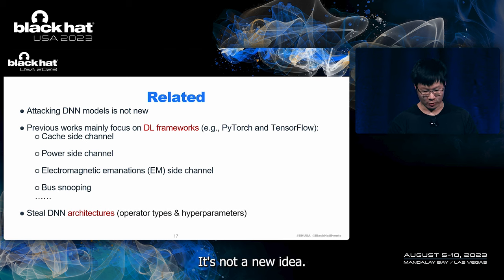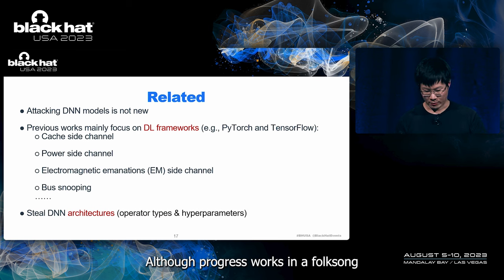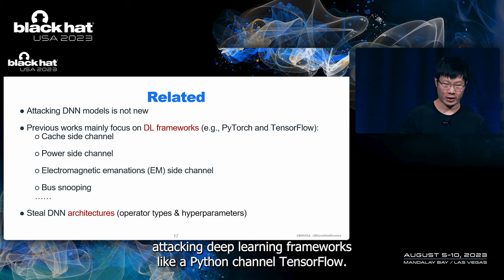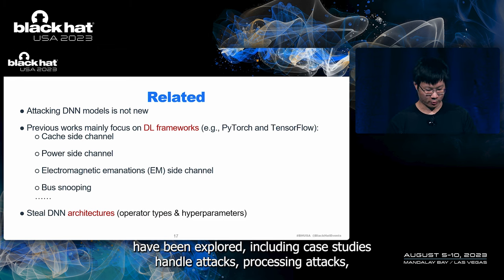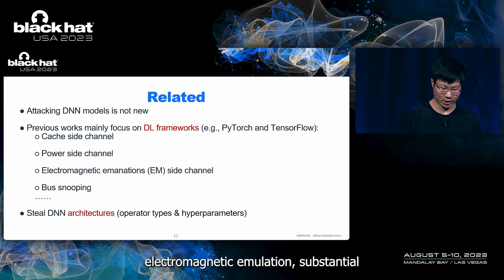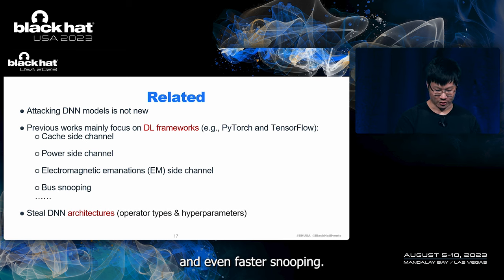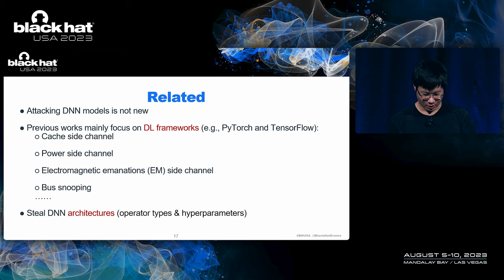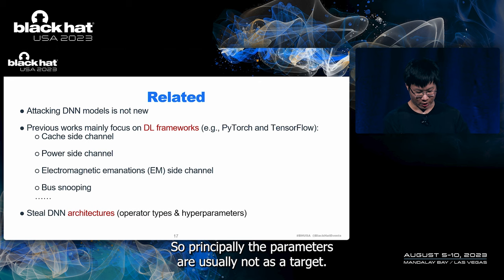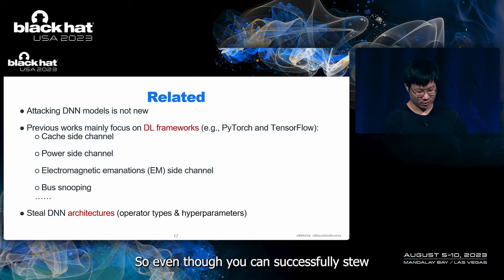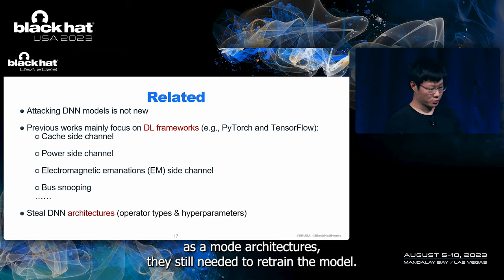Attacking DN models is not a new idea. Although previous works mainly focused on attacking deep learning frameworks like PyTorch and TensorFlow, many different attacks have been explored, including cache side-channel attacks, power side-channel attacks, electromagnetic emanation side-channel, and even bus snooping. Most of these attacks aim to steal DN model architectures — including operator types and the topology between operators — but pre-trained parameters are not typically the target. Even if they successfully steal the model architecture, they still need to retrain the model.